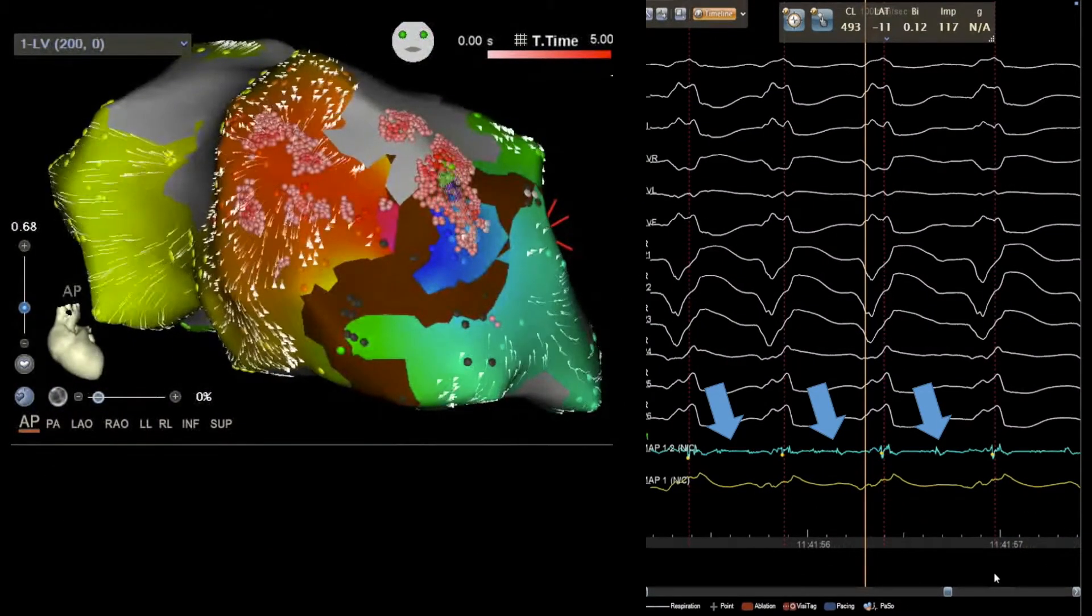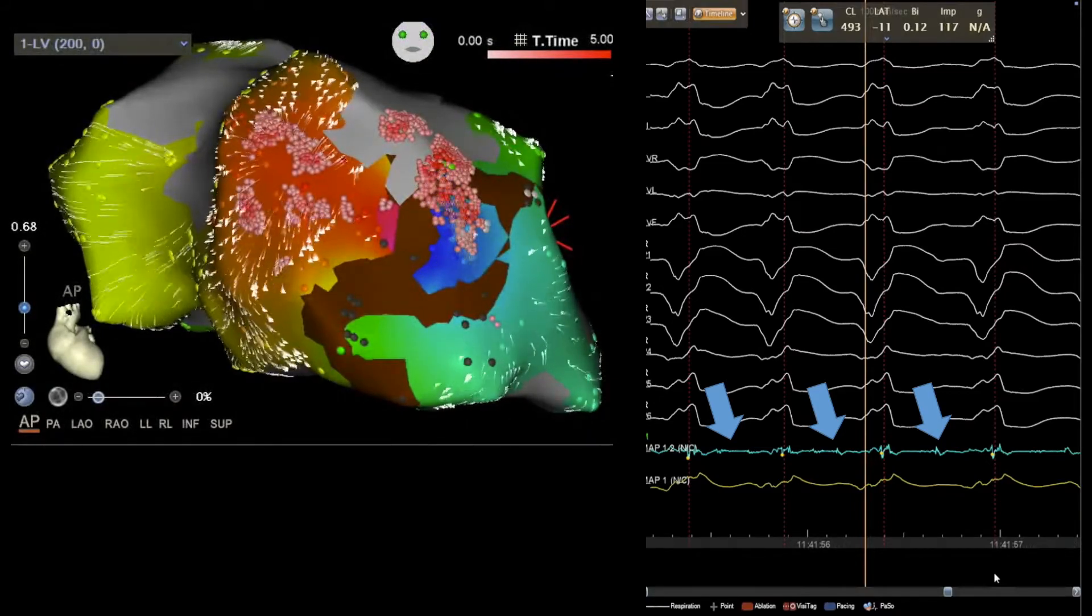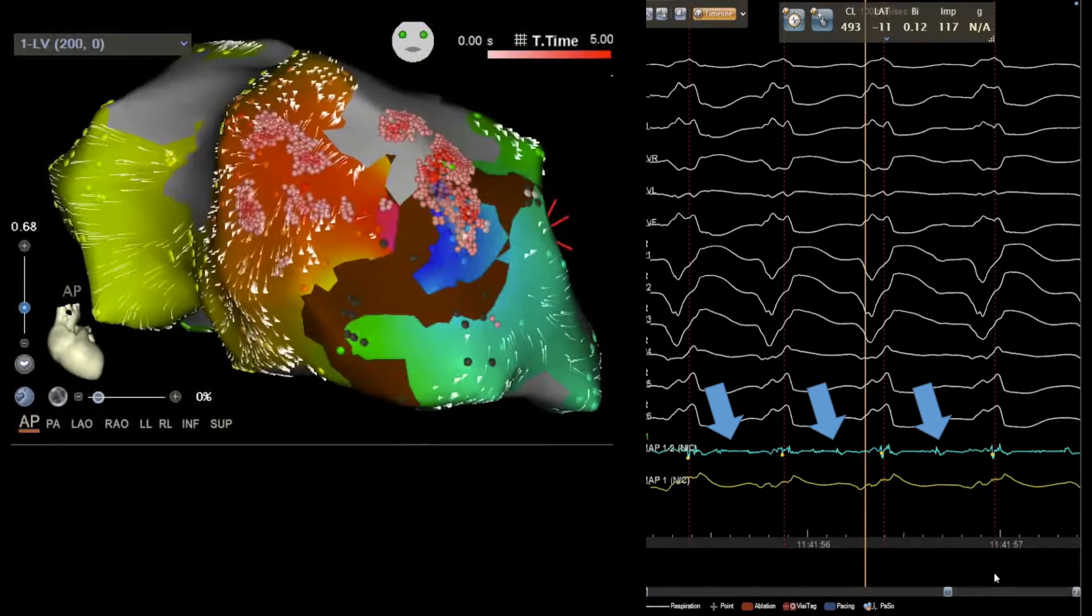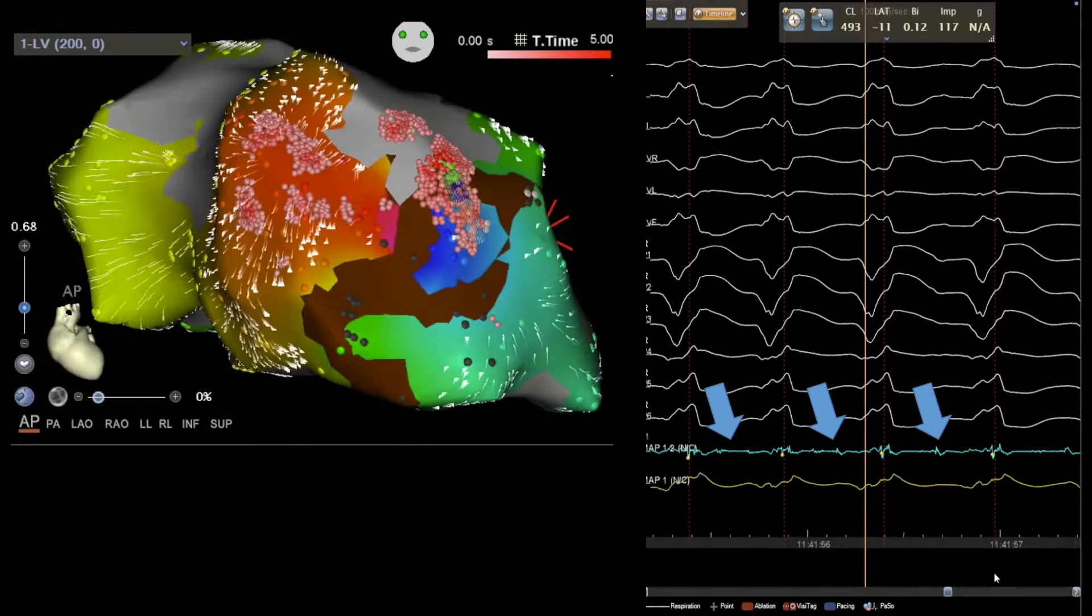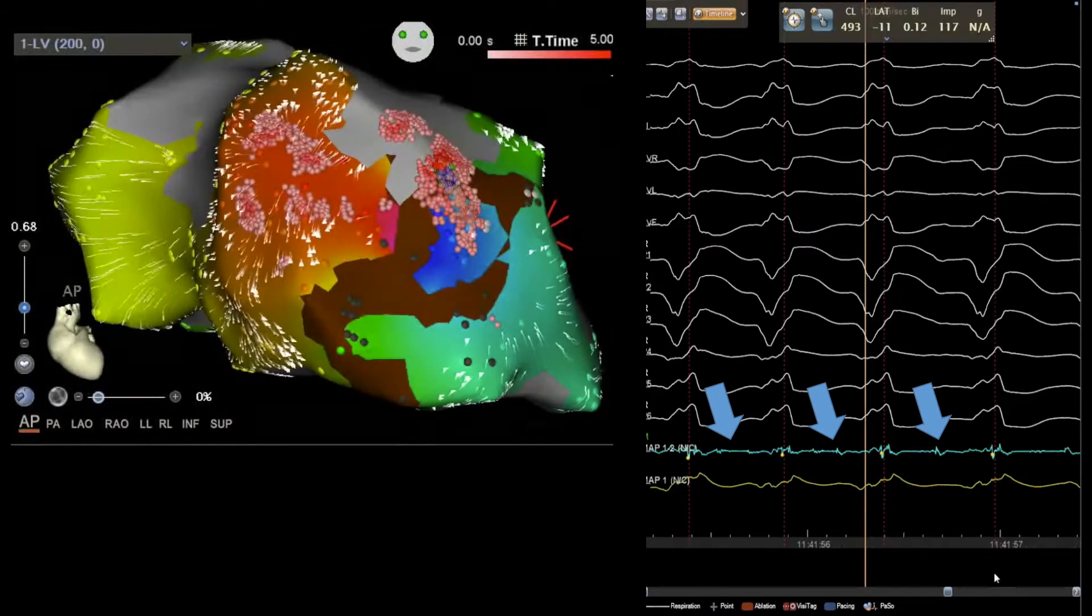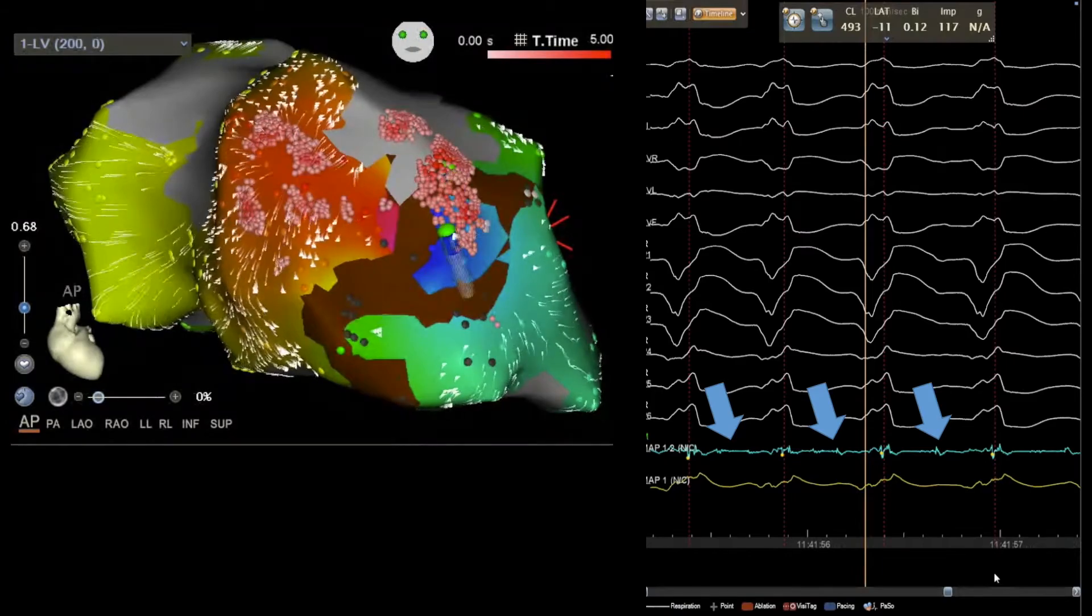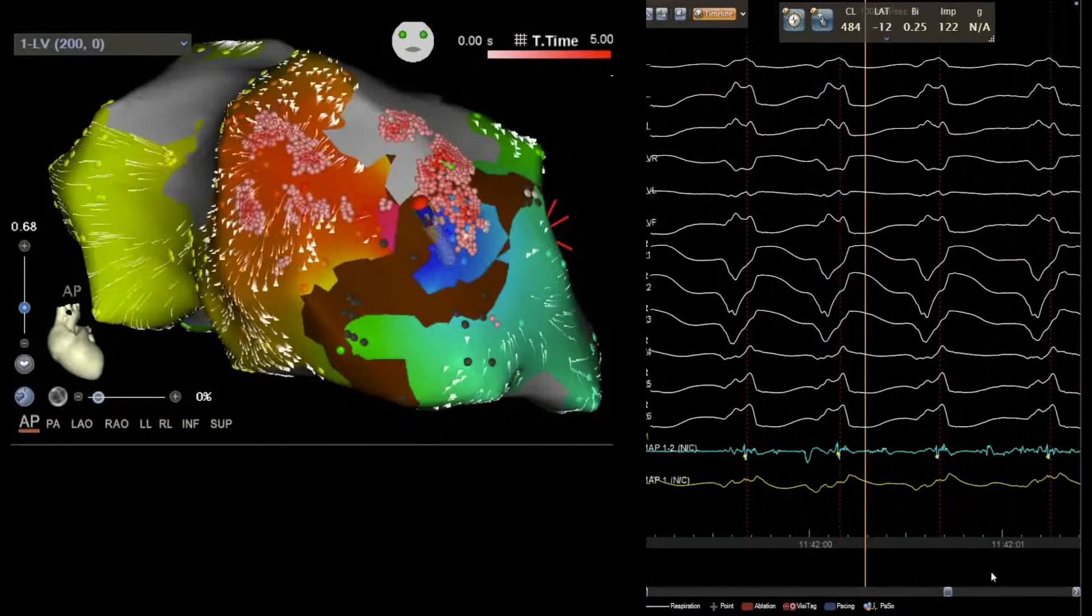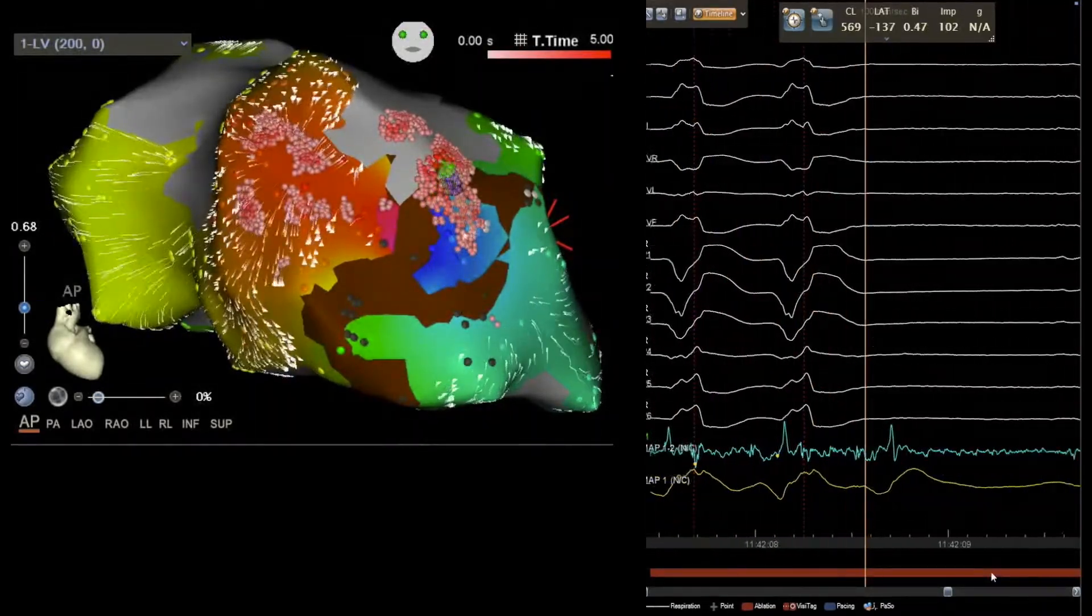On the left side, we see coherent mapping. This is a dynamic mapping. And as I said on previous slide, you can see here the circuit of the VT even with a limited number of points. On the right side, we see the signal on the successful ablation site almost amid diastolic potential on the critical isthmus. Now, we can see also the effect of ablation and then the termination of the ventricular tachycardia.